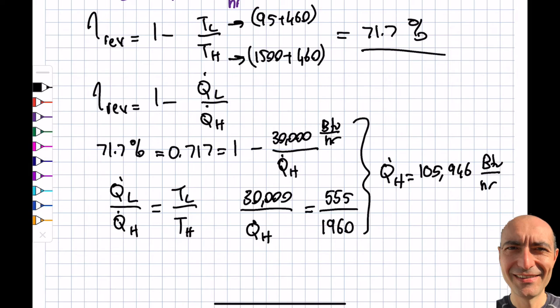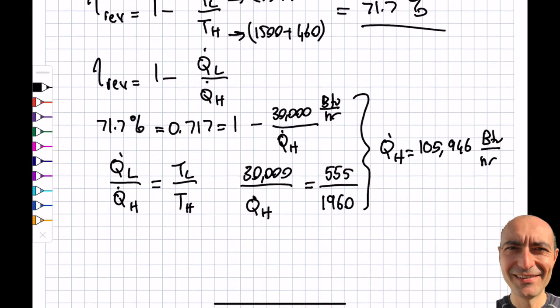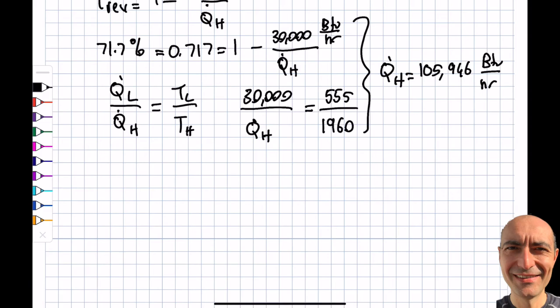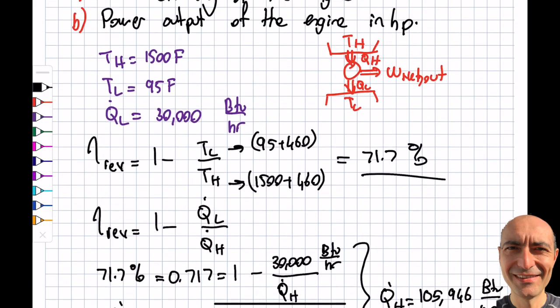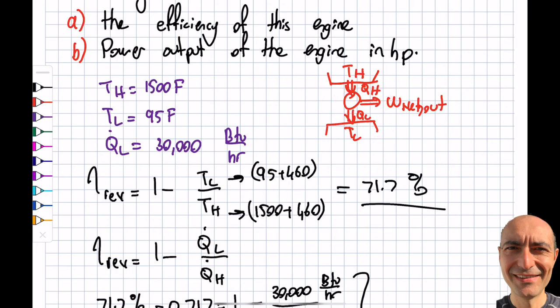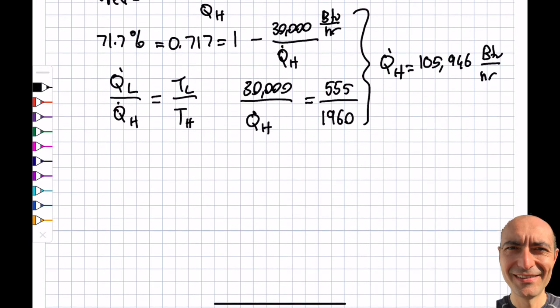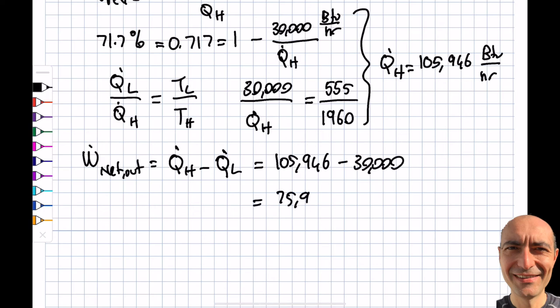The question asks for maximum power output, so I'll apply first law. W_dot_net_out = Q_dot_H - Q_dot_L = 105,946 - 30,000 = 75,946 BTU per hour.